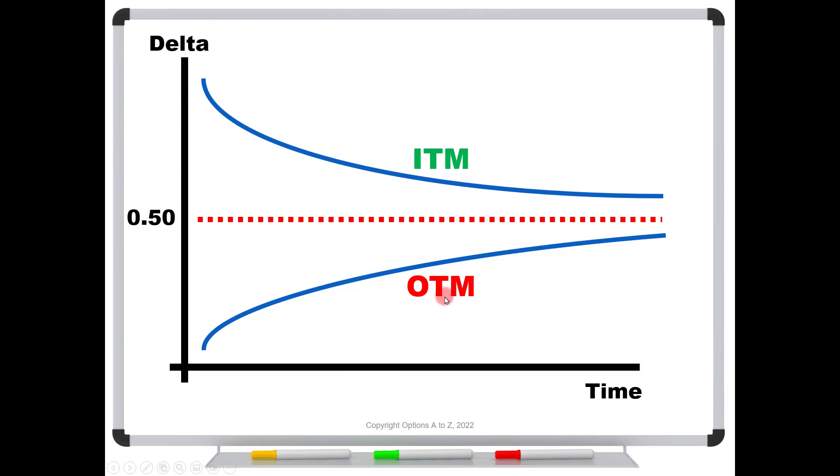So notice these are out of the money options. If we don't have a lot of time till expiration, and it's out of the money, the deltas are going to be very low. That's why this blue curve over here is sitting very low on our delta scale. But if we increase time, or if we increased volatility, we would start to see those deltas getting pushed towards a half. The opposite is true for the in the monies.